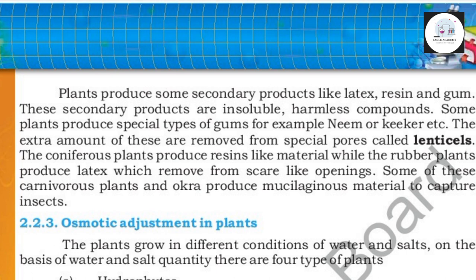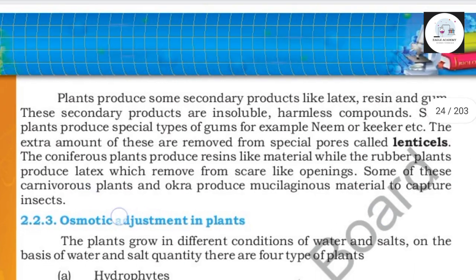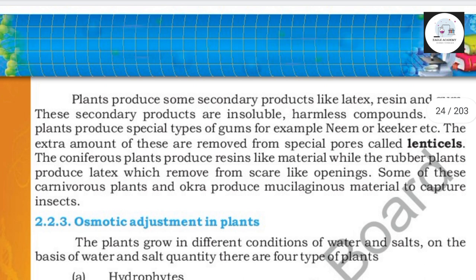Conifer plants produce resin-like material. Rubber plants produce latex, which is used in industry. Some carnivorous plants and okra produce mucilage — a jelly-like material — to capture insects.